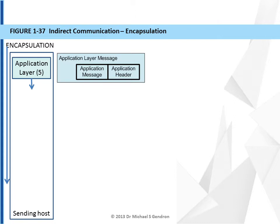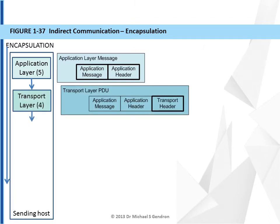For example, if we desire to have our web browser go to www.prenhall.com, the browser would create an application layer message that has that request. The application layer message is formed and it is sent down to the transport layer on the sending host. The transport layer creates its PDU by taking the application layer message and putting it into its payload and adding a transport header. The transport header will have protocol identifiers and a port number, which is used to identify the sending and receiving host applications.